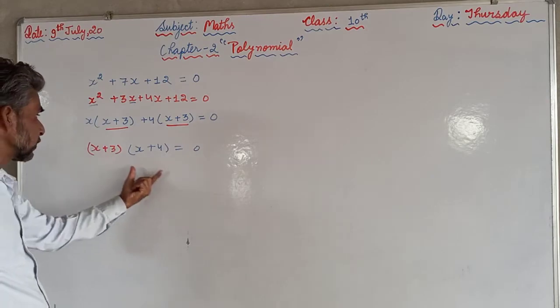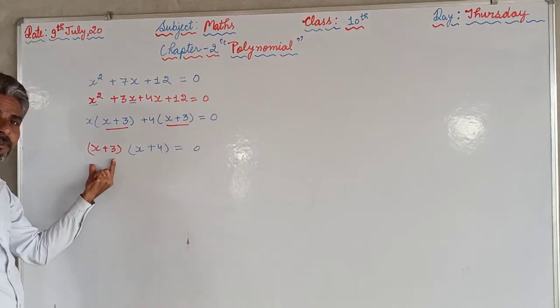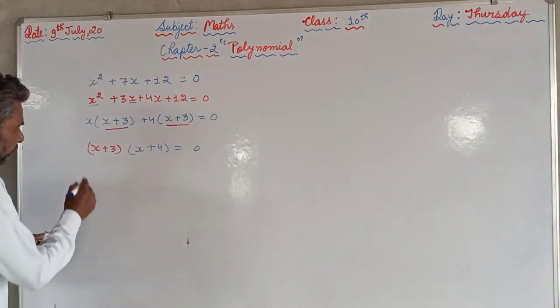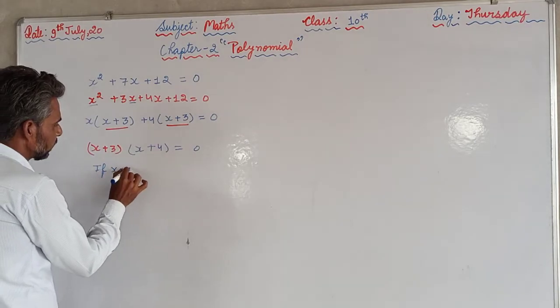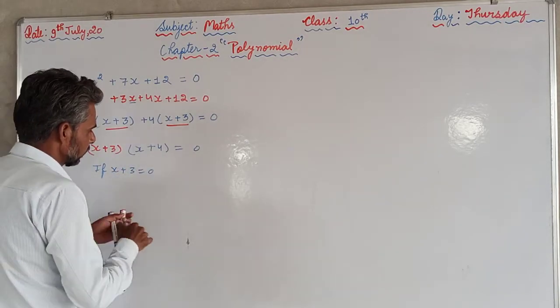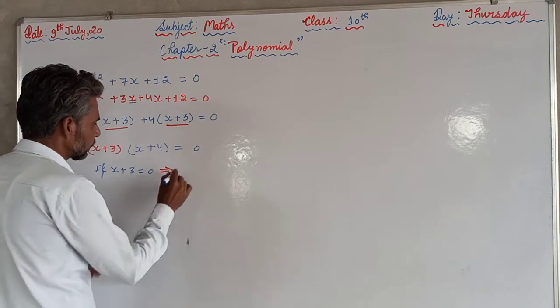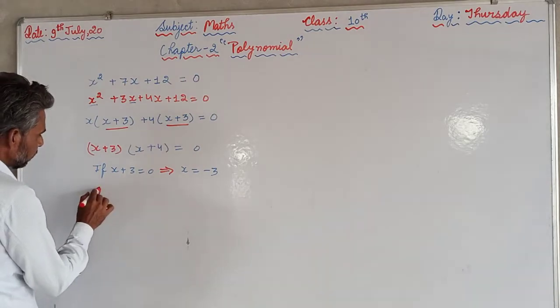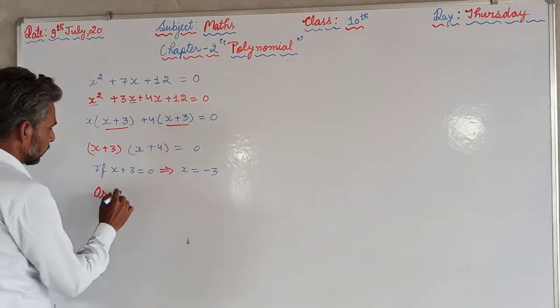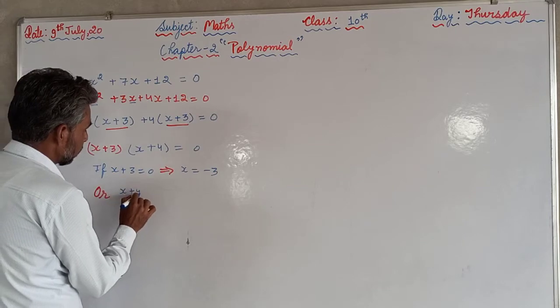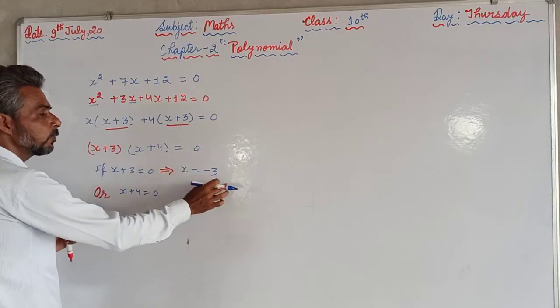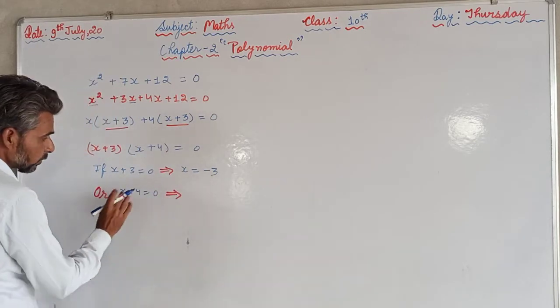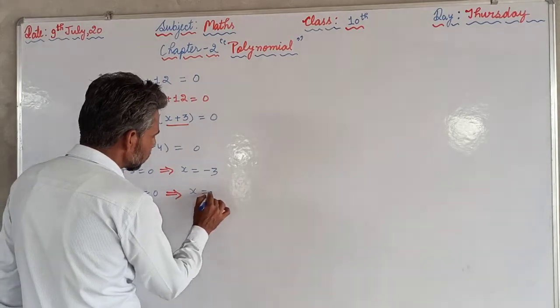So if this expression equals to zero, either this bracket will be zero or this bracket will be zero. One of the brackets should be zero. So if x + 3 equals to zero, it implies x equals to -3. Or x + 4 equals to zero, this is zero. If x + 4 equals to zero, then it implies that x is equal to -4.